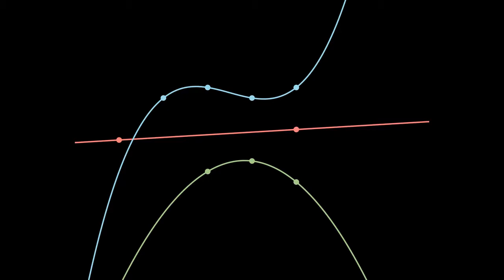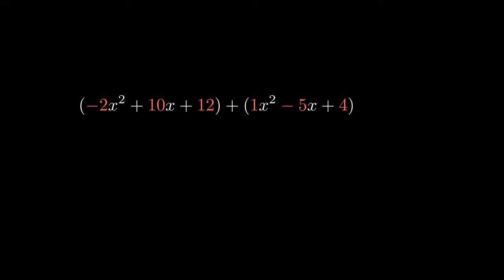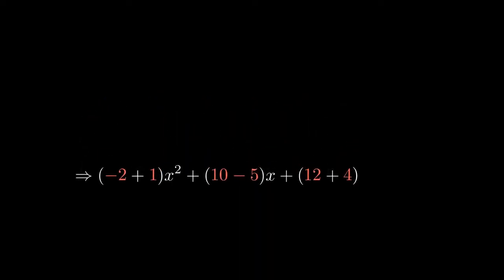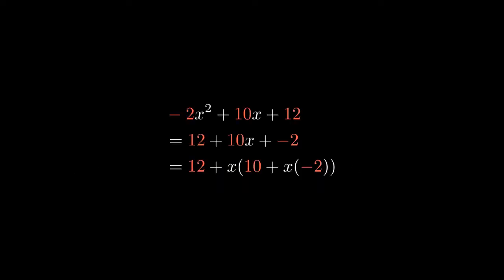What things can we do with polynomials, and how quickly can we do them? Let's say we're storing degree n polynomials as a list of coefficients. Adding polynomials can be done in linear time. Simply add together the corresponding coefficients. Evaluating polynomials via the standard school method requires a quadratic number of multiplications. Luckily, Horner's rule lets us evaluate polynomials in linear time by successively factoring out copies of x so that we can reuse our work.